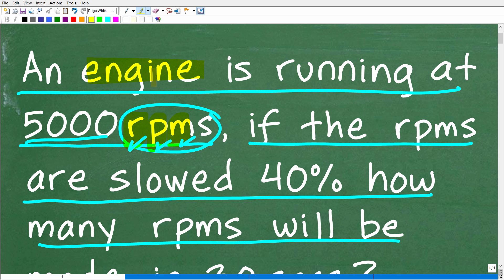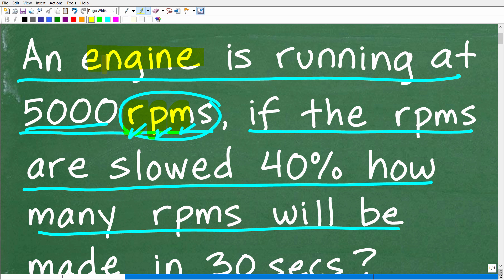So an engine, right? So an engine is turning. And basically, the way we measure how fast the engine is turning, a turn is what we call a revolution, is called RPM. So an engine is running at 5,000 RPMs.